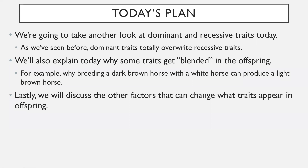As we've seen before, dominant traits totally overwrite recessive traits. In other words, if you have one dominant characteristic, it totally overwrites any of the recessive characteristics you hold on to. Or does it? We're going to explain today some traits that get blended in offspring — traits that aren't fully dominant.